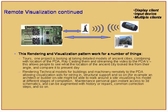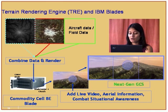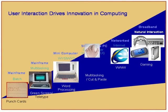For remote visualization, there is a terrain rendering engine with a demo available. With high-resolution satellite imagery, Cell Broadband Engine can capture the data and perform server-side rendering on the blade, using a technique called ray casting to determine depth and combine reflected colors to produce the final image.